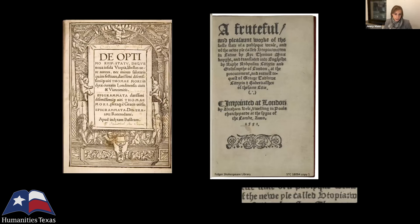The word utopia was coined by Sir Thomas More in a book of that name published in Latin in 1516. More was a famous English humanist and Lord Chancellor to King Henry VIII. His utopia is a philosophical text that presents itself as a traveler's tale. Its narrator, a man named Raphael Hithliday, is a fictional traveler who has journeyed to an idealized island nation with an apparently perfect political system, and the text is in part a description of what he saw there. The name of the island is utopia.